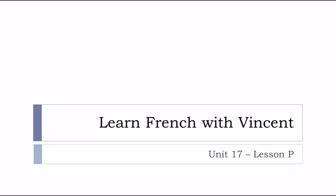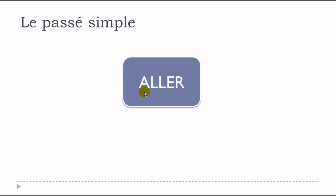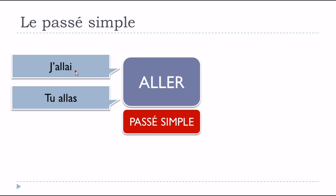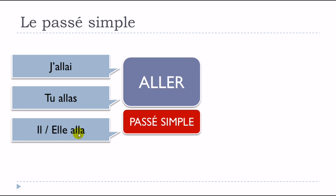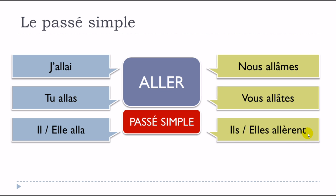Bonjour à tous and welcome to Learn French with Vincent. This is Unité 17, Leçon P — we'll see le verbe ALLER and more precisely la forme du passé simple. Le verbe ALLER au passé simple: j'allai, tu allas, il alla, elle alla, nous alâmes, vous alâtes, ils allèrent, elles allèrent.